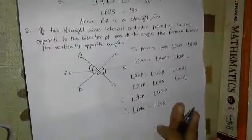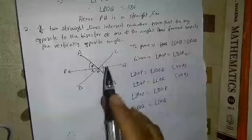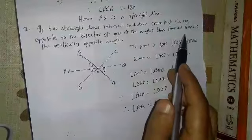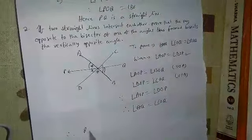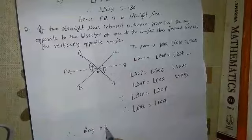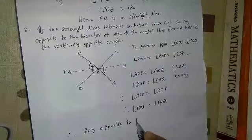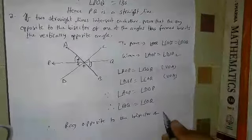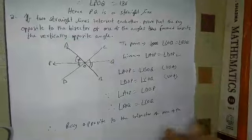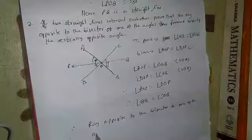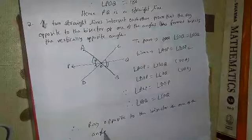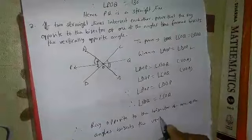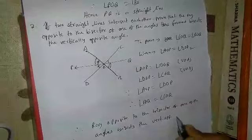Therefore, the ray opposite to the bisector of one of the angles bisects the vertically opposite angle.